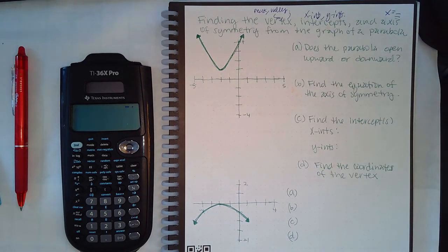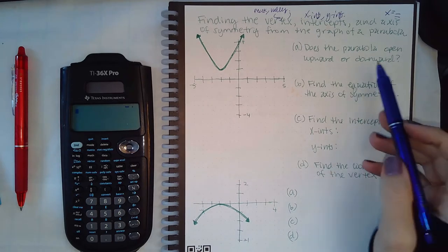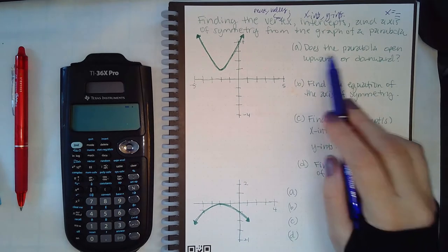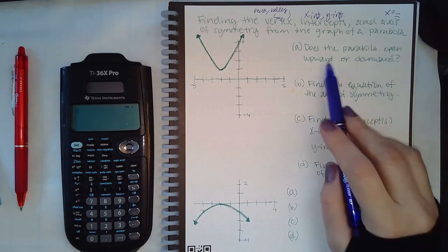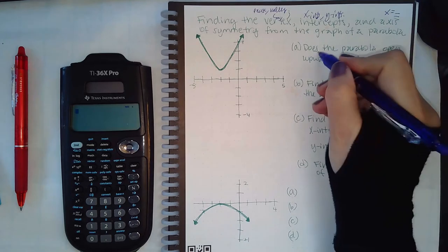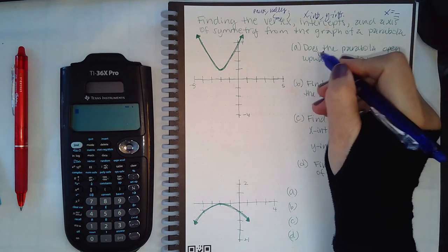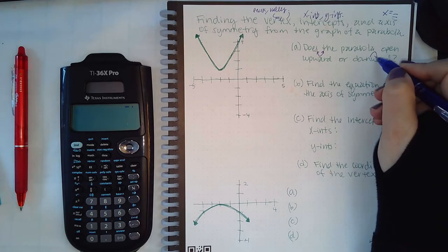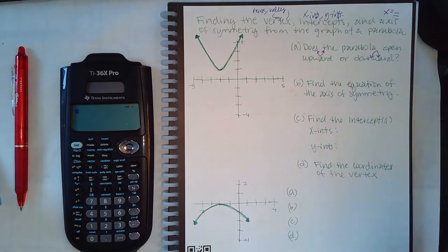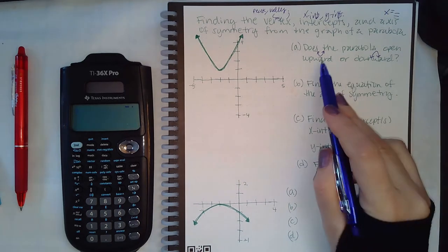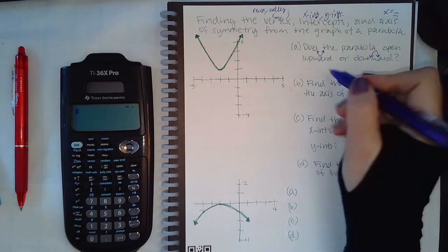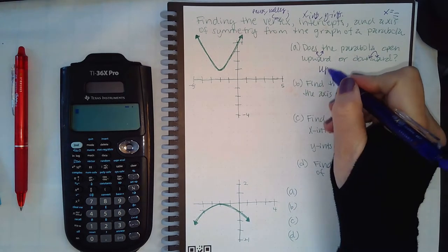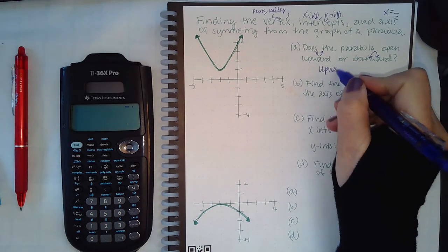So let's look at this parabola here. Does the parabola open upward, which is like a U, or does it open downward, like a hill? This one actually opens upward, so here you would select upward.